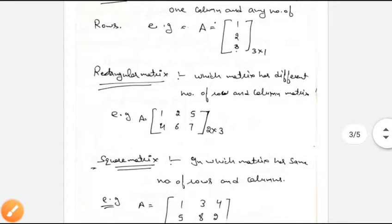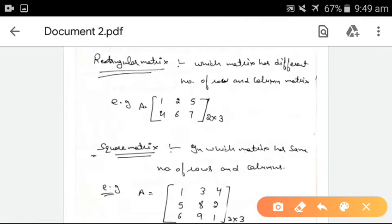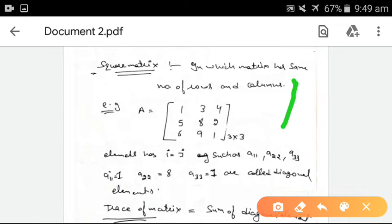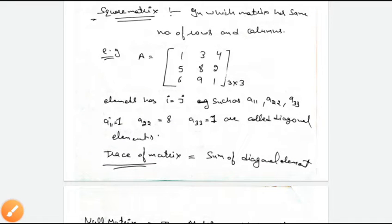Rectangular matrix: a matrix which has a different number of rows and columns. We can say that the number of columns and number of rows are not the same. For example, a matrix of order 2 by 3 means the number of rows is 2 and number of columns is 3. Square matrix: like a square, which has same sides. In this matrix, the number of rows and columns are the same. For example, matrix A has order 3 by 3, so the number of rows and columns are both equal to 3.